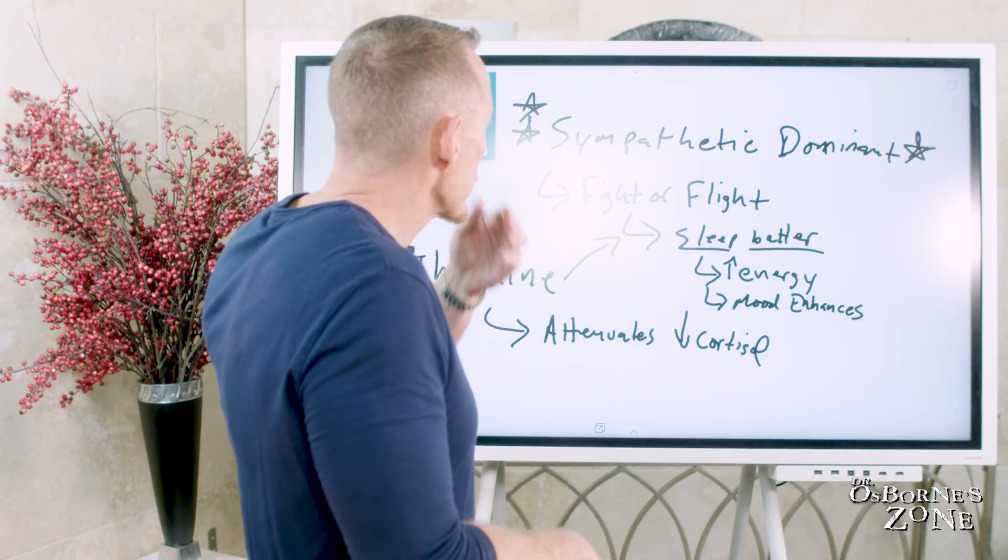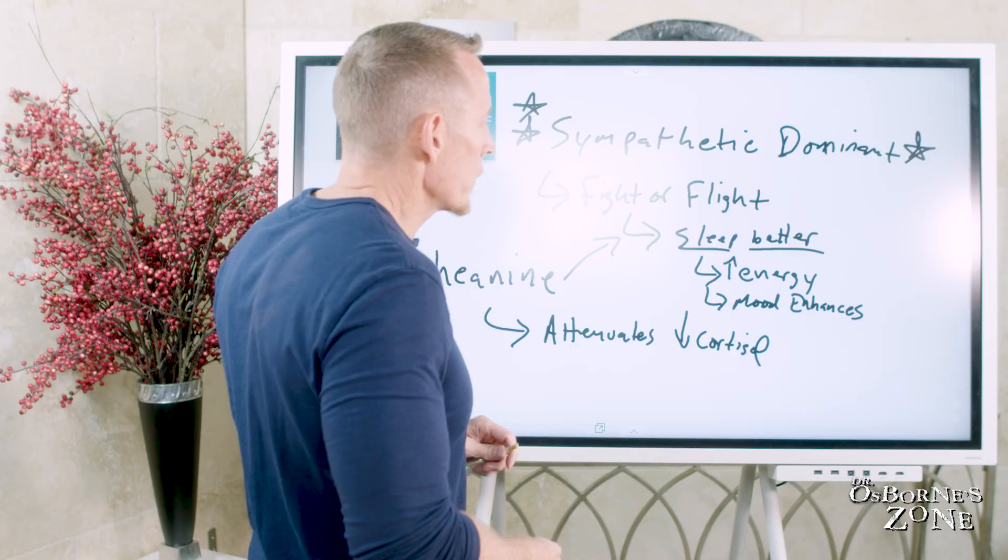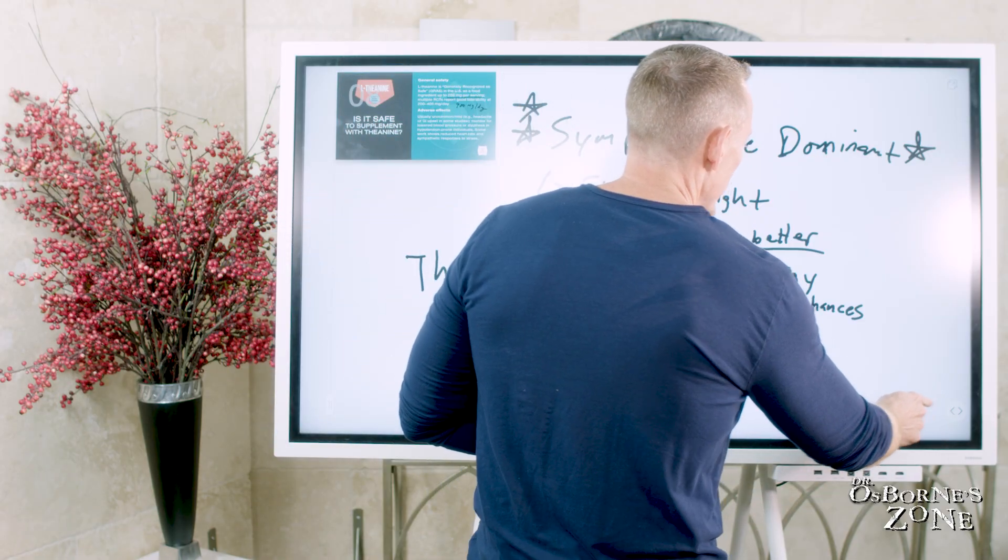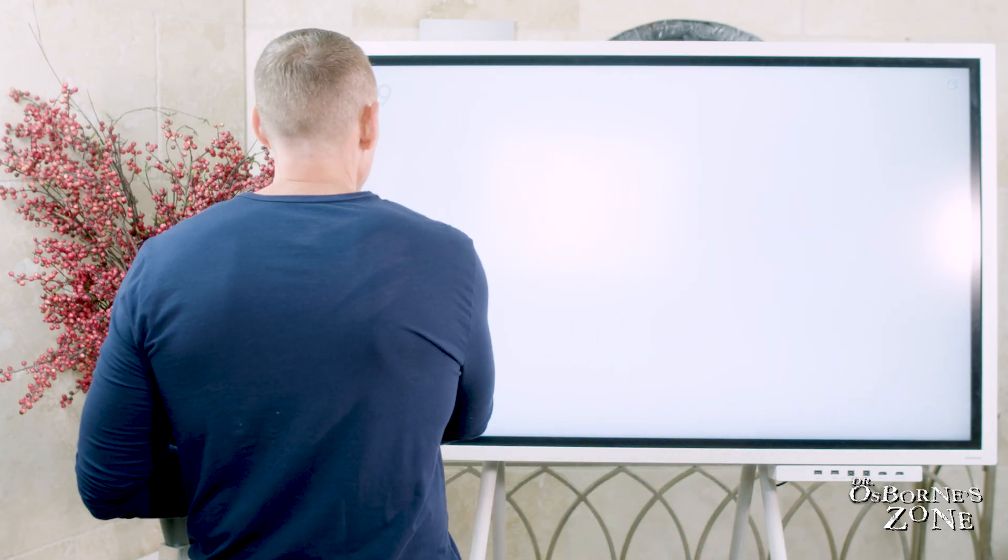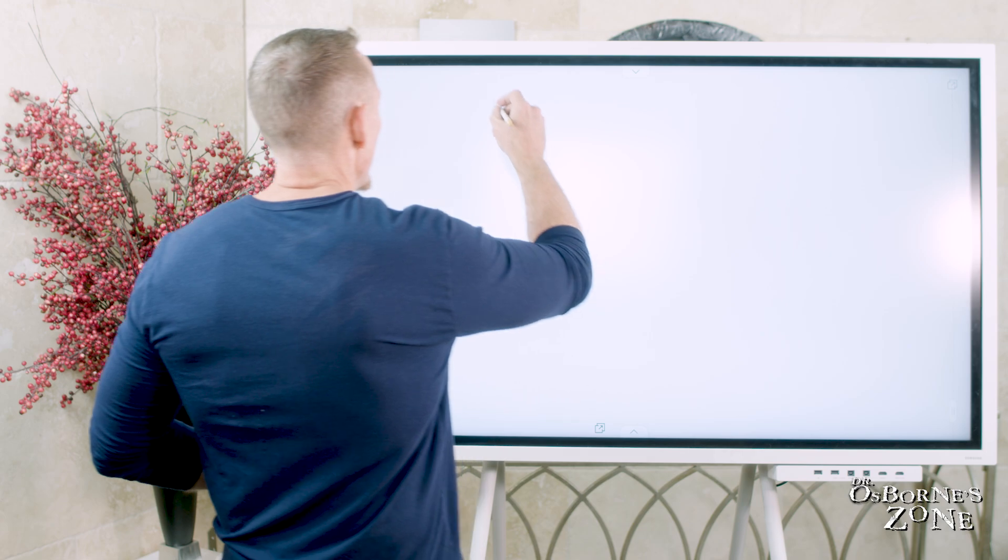We always talk about fundamentally, what are the six things that you have to do? You cannot negotiate with to have good health. One, your diet. It has to be real food. It has to be a clean diet. It has to be food you're not allergic to. It needs to be free of chemicals, additives, and all the pesticides and other chemicals.